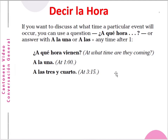Continuing telling time — decir la hora. If you want to discuss at what time a particular event will occur, you can use the question ¿A qué hora? — at what time? Answer with a la una, a las dos, or a las tres, etc. Up to one o'clock you use a la; more than one o'clock you use a las.